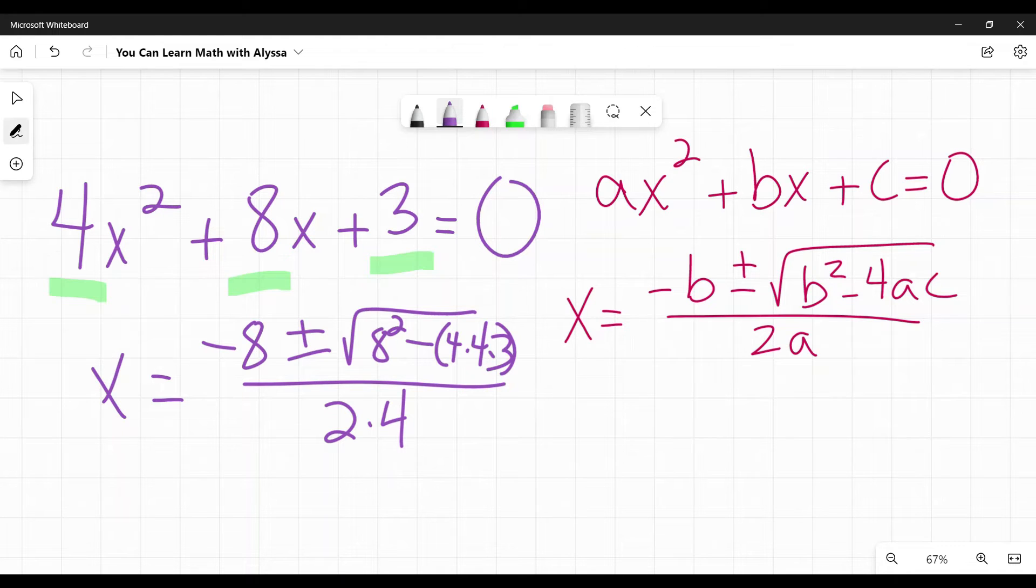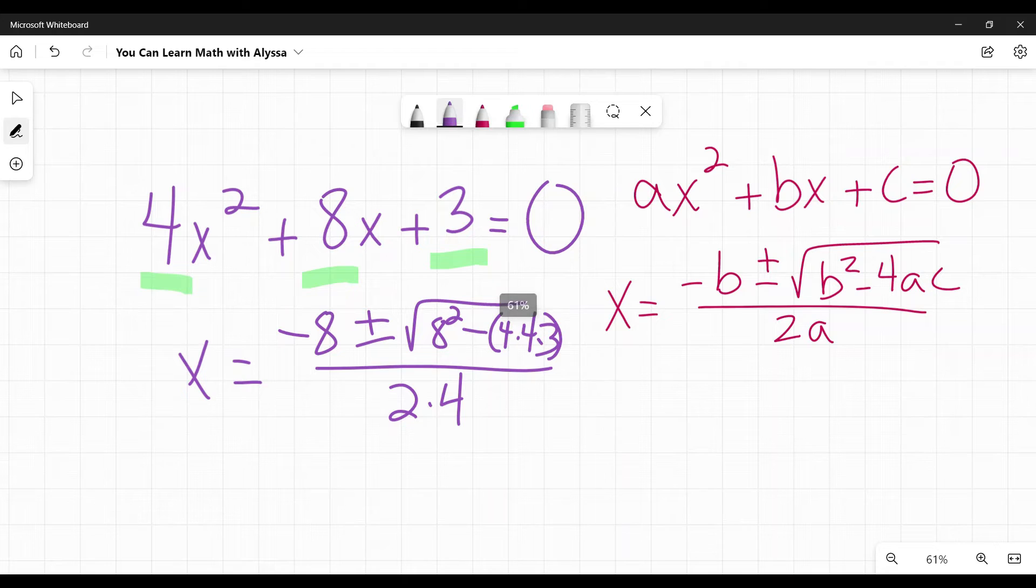Now from this point on, it's really just about being very careful in your math. So underneath that radical, I have eight squared, which is 64 minus four times four times three or 48, 64 minus 48 is 16 over two times four, which is eight.